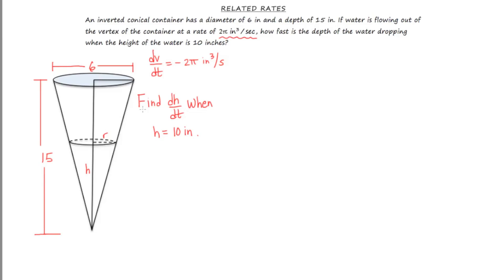Okay, so we've labeled our diagram, we've listed what we know, and we've listed what we're trying to find. So as the title might suggest, related rates, we need some way of relating all these variables together, and that's going to be through the volume of a cone formula. That formula is V = (1/3)πr²h.